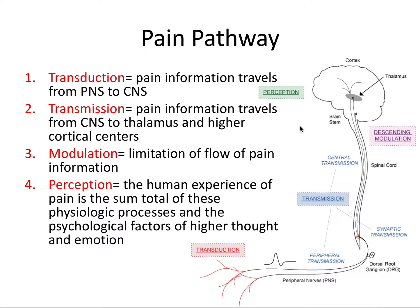Now we can get a little bit more into the weeds. There are dorsal column lemniscus and anterolateral pain pathways — a bunch of different nerve pathways that you do not need to know for part two of the board exam. They are tested on part one. So if I eventually start making part one videos, we can definitely cover those pathways. But for part two, this is all you need to know for the pain pathway.